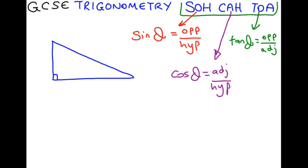First of all, it's got to be a right angle triangle. That means that one of its angles is 90 degrees. Otherwise, these famous formulas will not work.